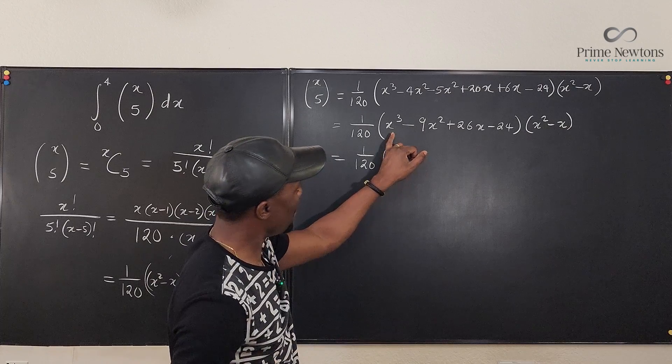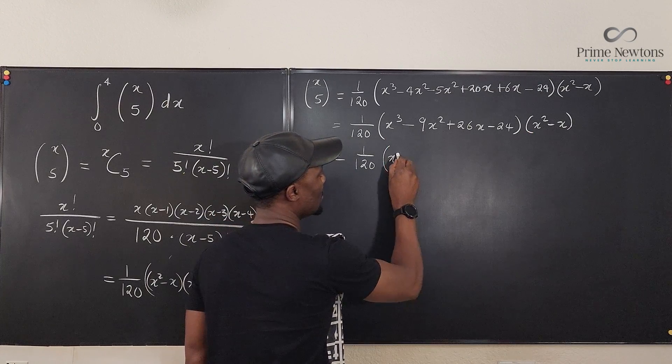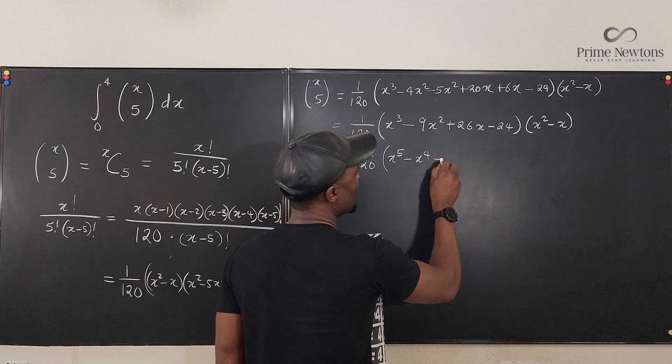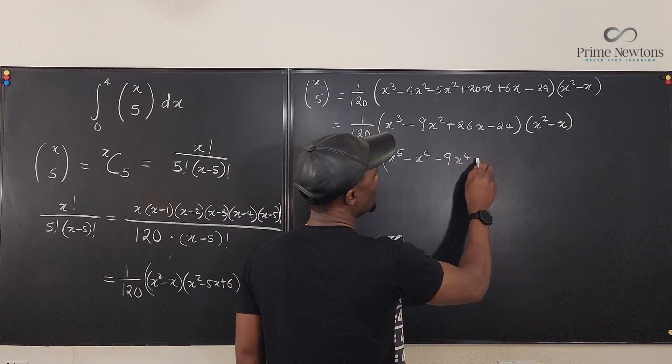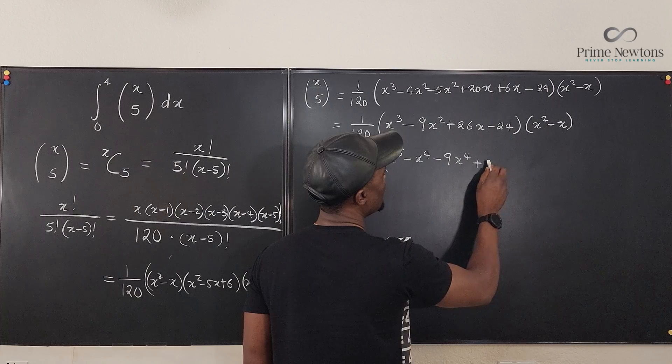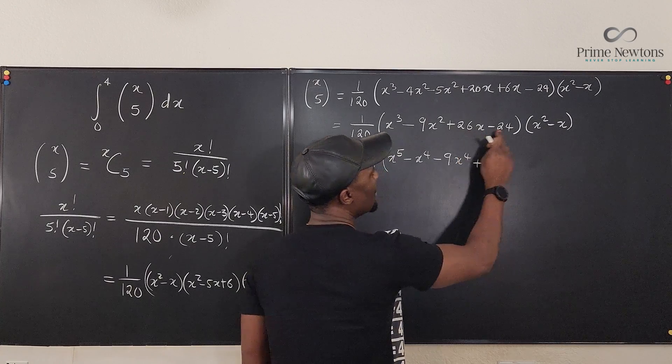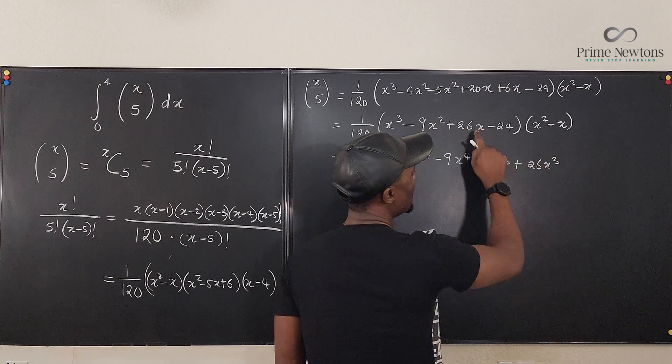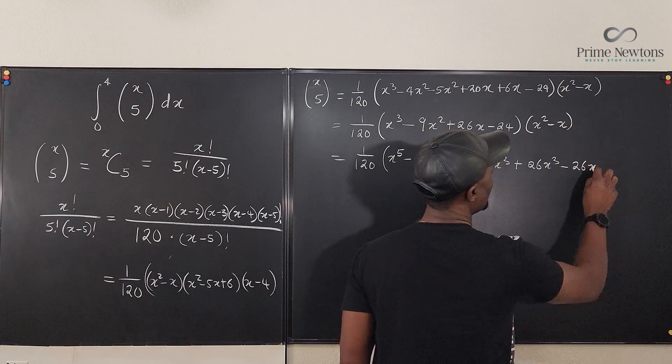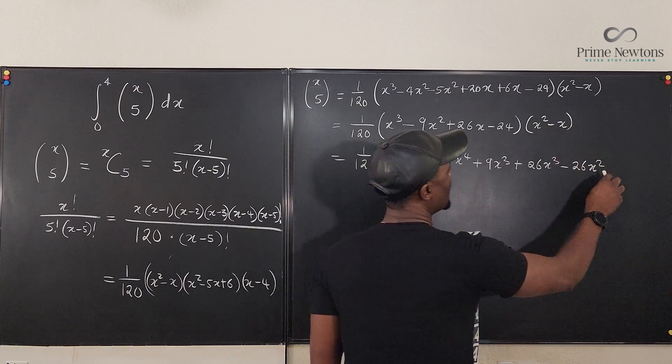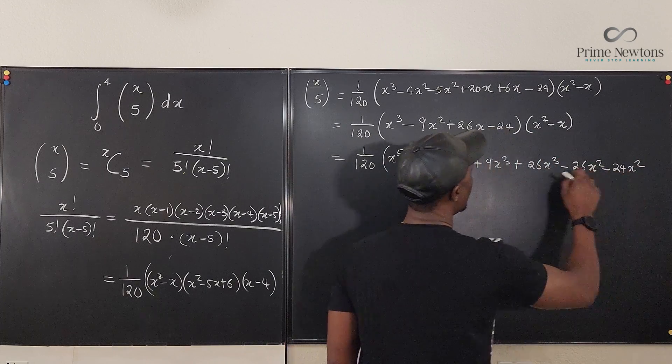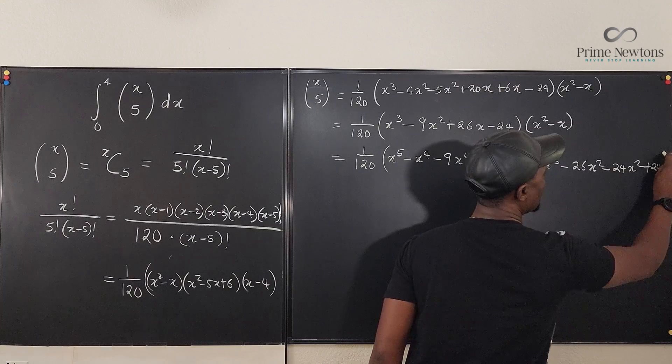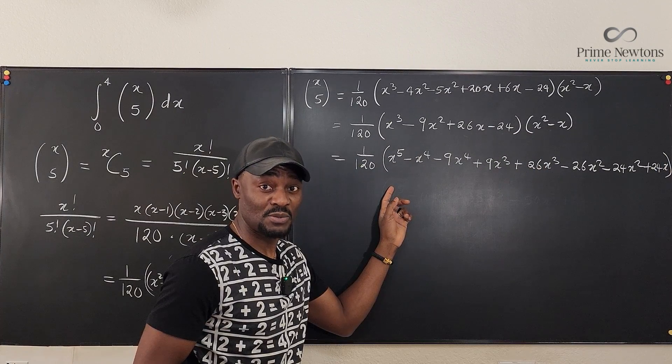This is 1 over 120 times. This is going to be x to the fifth, x to the fifth minus x to the fourth. This is minus 9x to the fourth. This is plus 9x cubed. And this multiplies this plus 26x cubed. This multiplies this minus 26x squared. This multiplies this minus 24x squared. And this multiplies this plus 24x. Okay, now we just need to combine all the terms together.